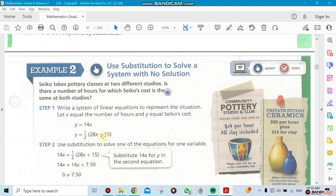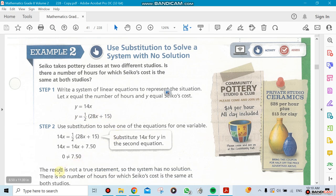If I go ahead and take the 14x and substitute it for the y, I should get an answer that would work. For example, if I say 14x equals one-half times 28x plus 15, I'm going to end up with an answer that is 0 not equal to 74.